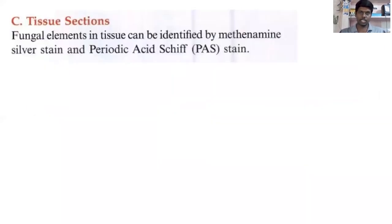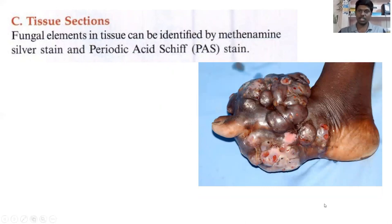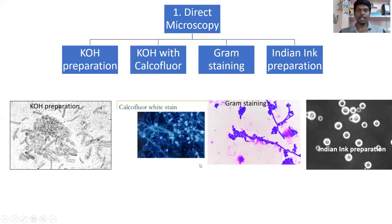Then we discussed tissue sections. Some fungal infections are systemic in nature — they penetrate deep into tissue resulting in deep infections. These systemic fungal infections can be determined by taking a biopsy of the specimen, making a section cut, and staining with special stains such as periodic acid-Schiff stain to visualize the fungus.